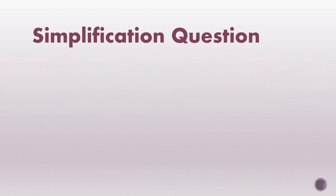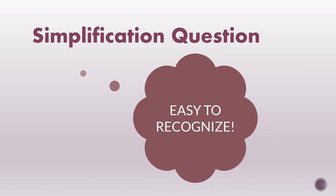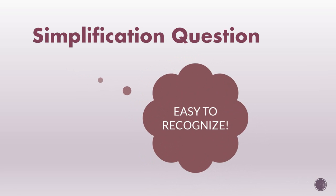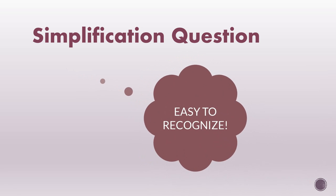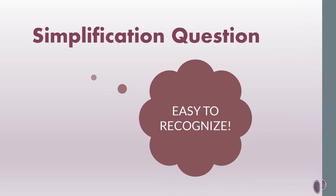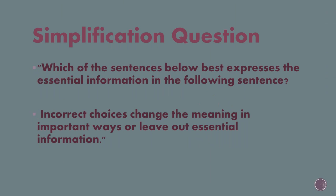Sentence simplification questions are easy to recognize because the wording of the question is always exactly the same: 'Which of the sentences below best expresses the essential information in the following sentence?' Incorrect choices change the meaning in important ways or leave out essential information.